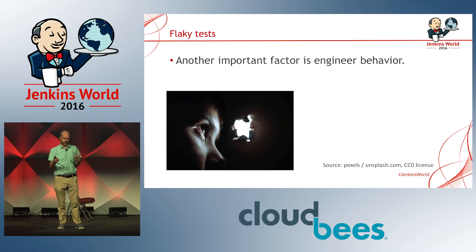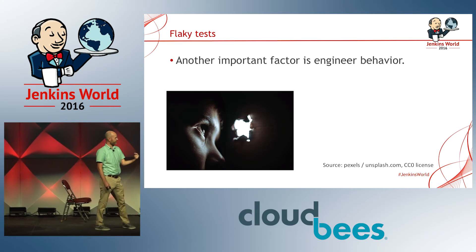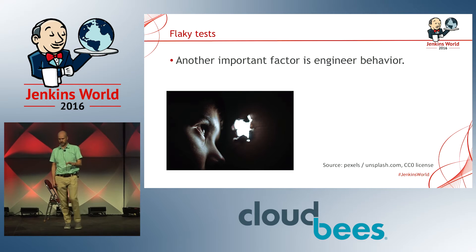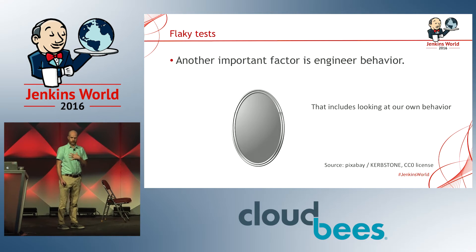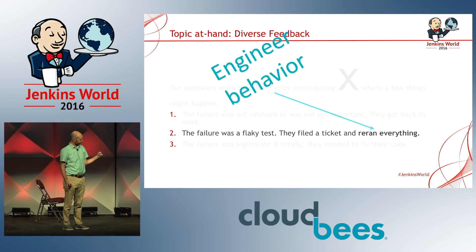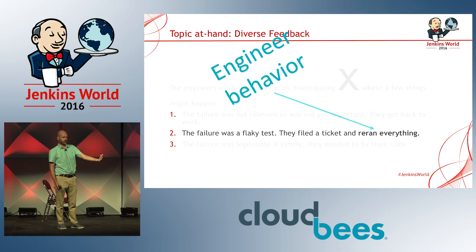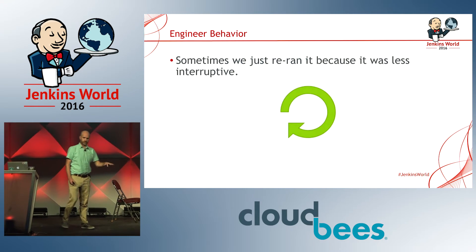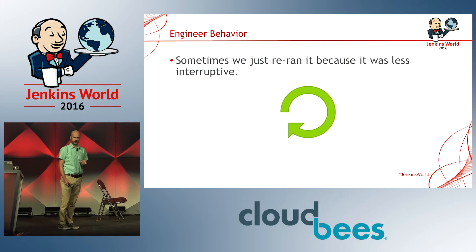As we were looking at this model and questioning the one-bit approach, we asked: what's the actual behavior of engineers? In our case, that included looking at ourselves. What we found, particularly with flaky tests that might be unrelated, is that folks re-ran everything — whether that was a new commit or interacting with Jenkins to ask for a new build. If we had everything bundled into one build, that could be costly and take time. Even with the best intentions, we found that even ourselves, we would just hit rerun — it's less interruptive, and you can get back to work and check later for a green checkmark.